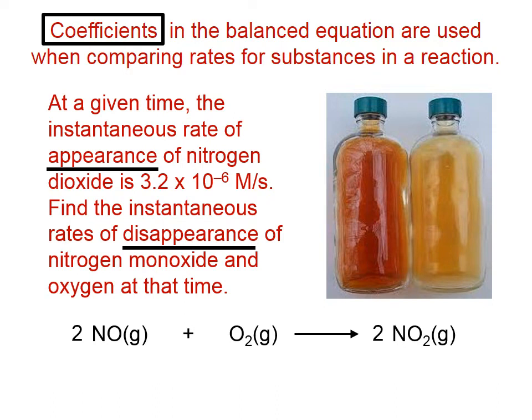We're told that the rate of appearance of NO2 is 3.2 × 10^-6 M/s. We put a positive sign there because this is appearing. We're making more of it. The rate of appearance of this is related to the rates of disappearance of these two in proportion to these coefficients in the equation that I've circled.